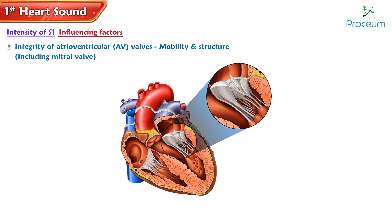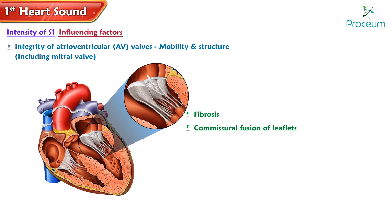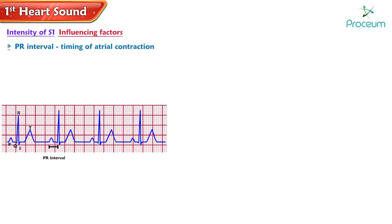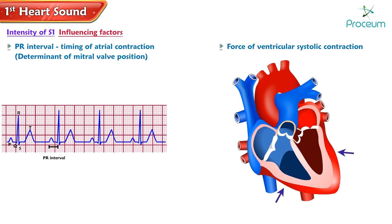The mobility and structural integrity of the atrioventricular valves, including the mitral valve, can influence the strength of S1. Conditions such as fibrosis or commissural fusion of the valve leaflets and tethering of the posterior mitral leaflet may affect S1. The PR interval — representing the timing of atrial contraction relative to the onset of left ventricular contraction — can also determine mitral valve position and influence S1 intensity. Finally, the force of ventricular systolic contraction contributes to the loudness of S1.